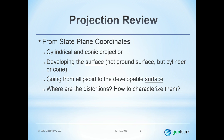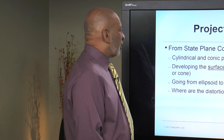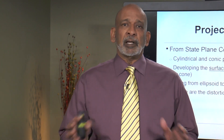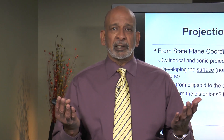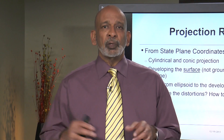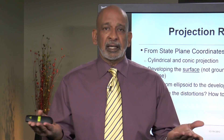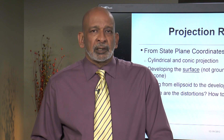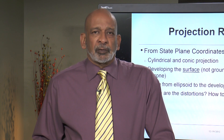In the first course, we talked about cylindrical and conic projections. We talked about developing the surface — not the ground surface, but the cylinder or cone's surface — and how to go from the ellipsoid to the developable surface. A developable surface is a cylinder or a cone which can be slit along its length and then laid out flat, and this is the mathematical operation that occurs when you compute the state plane coordinates of points.